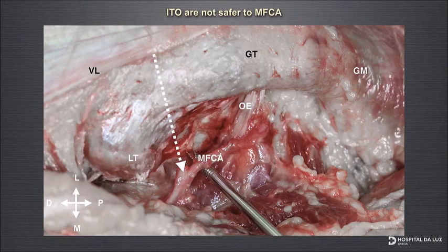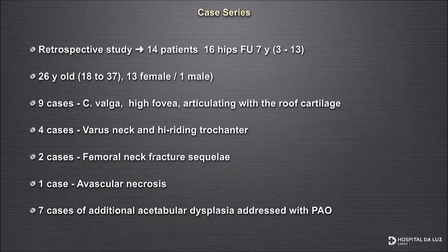This is a retrospective study with 14 patients, 16 hips, average follow-up of 7 years (range 3 to 13 years), average age 26 years, 13 females. We have 9 cases of coxa valga with high-riding fovea, 4 cases of varus neck with high-riding trochanter, 2 cases of femoral neck fracture sequelae, 1 case of AVN, and in 7 cases we performed additional PAO to address dysplasia.